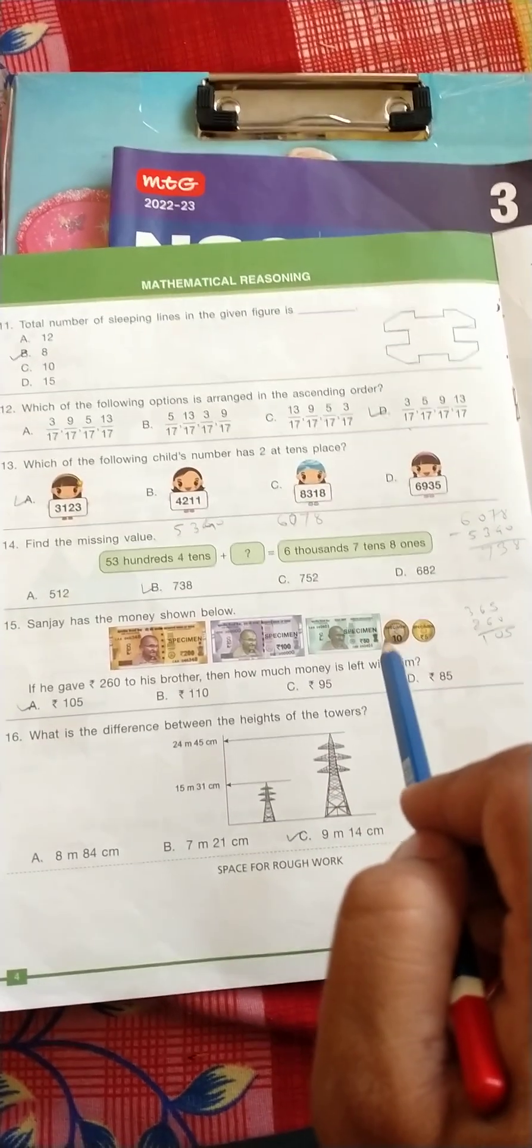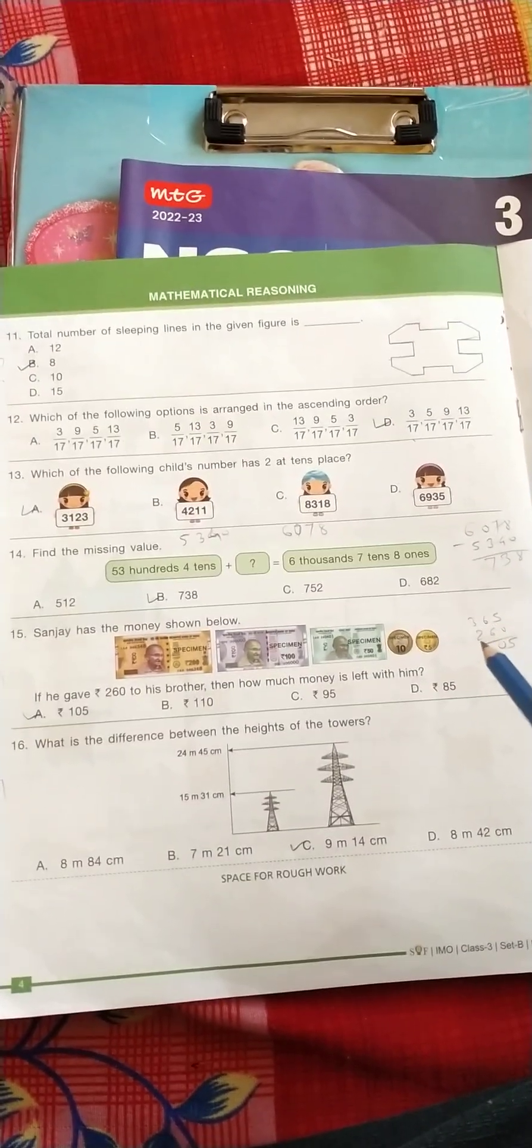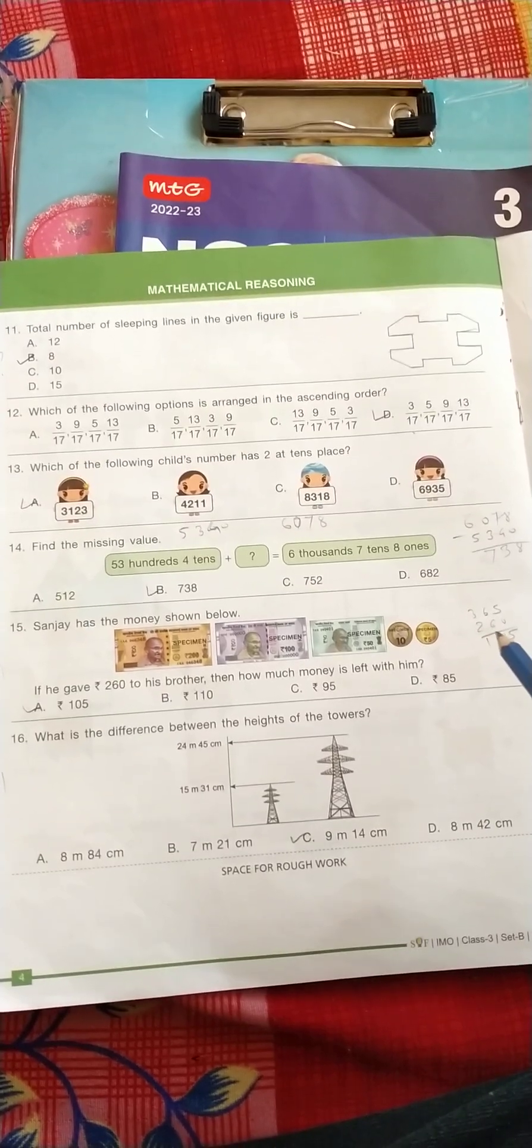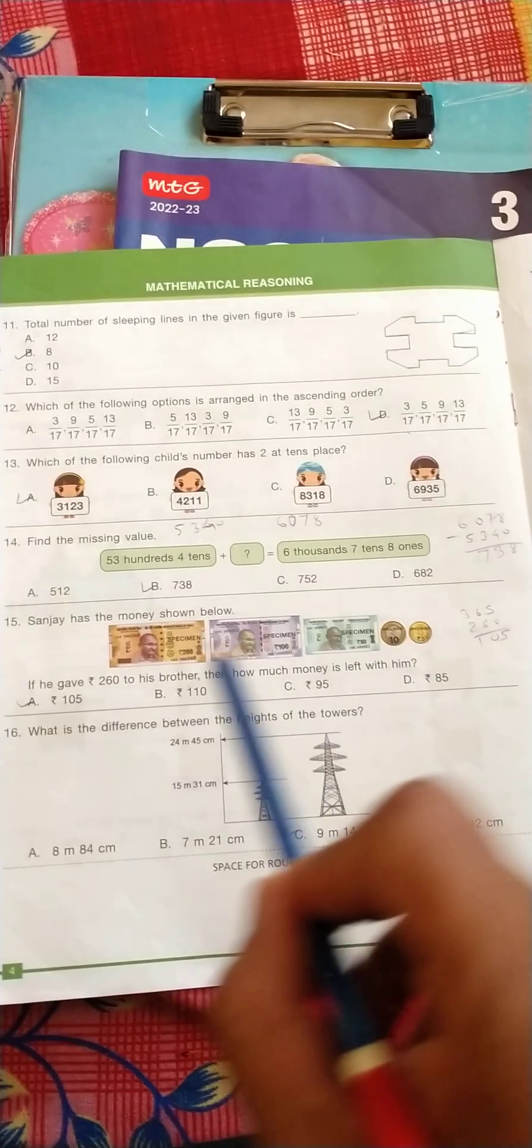150, 10, and 5, total 365. He gave 260 to his brother, so 365 minus 260, the correct answer is 105, option A.